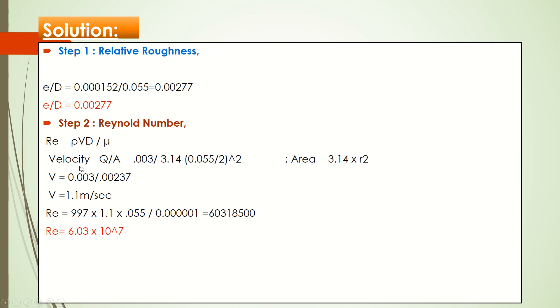Velocity is equal to flow rate divided by area. Flow rate you are already given in data: 0.003 m³/sec. Area is equal to 3.14 multiply by square of radius. So putting the values, you will get velocity 1.1 m/sec.